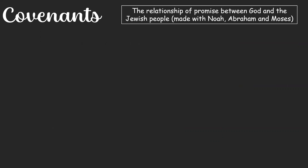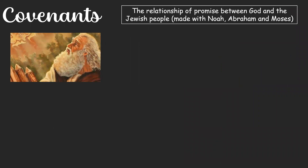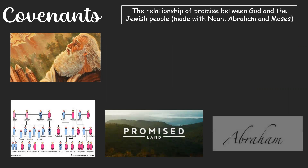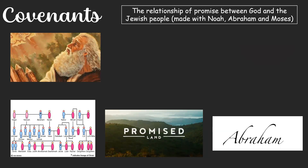In Genesis, Abraham is unable to have children with his wife. He lives in the land of Ur and God speaks to him. God promises to Abraham many descendants, a land and a famous name. This will be an everlasting covenant. God commands Abraham to create a sign of this covenant in Genesis 17.